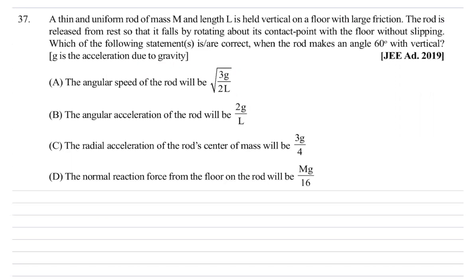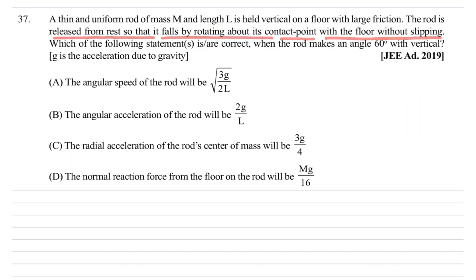Question number 37: A thin and uniform rod of mass m and length l is held vertical on a floor with large friction. The rod is released from rest so that it falls by rotating about its contact point with the floor without slipping. Which of the following statements are correct when the rod makes an angle 60 degrees with the vertical?